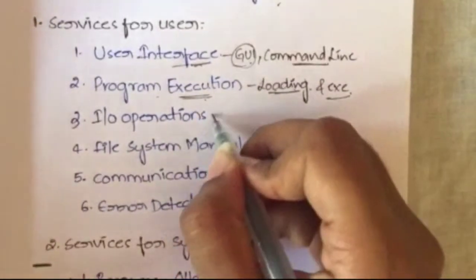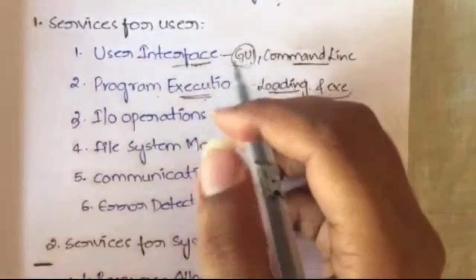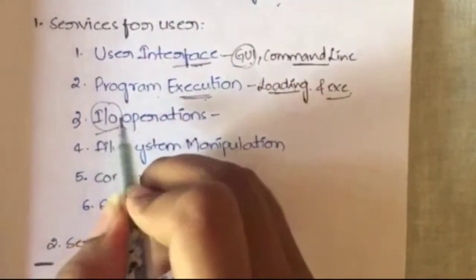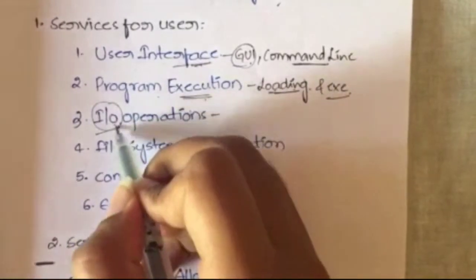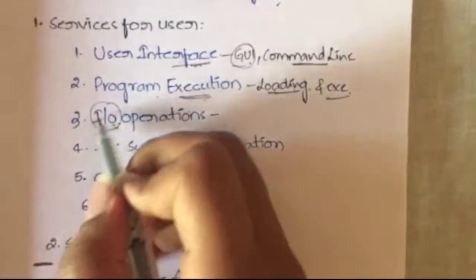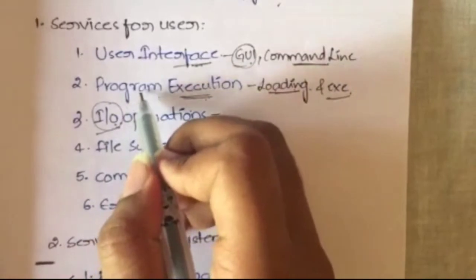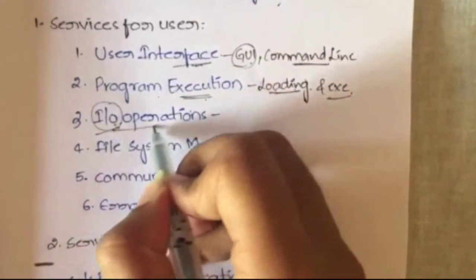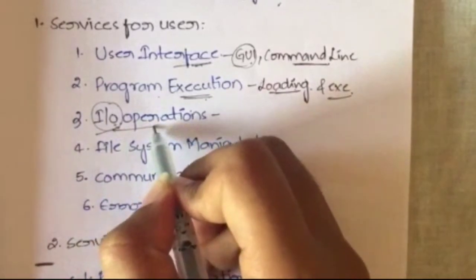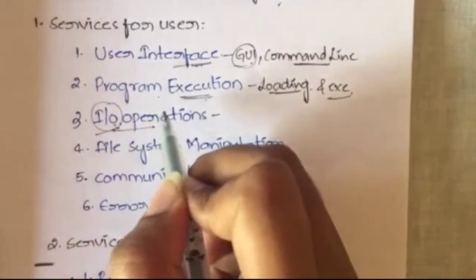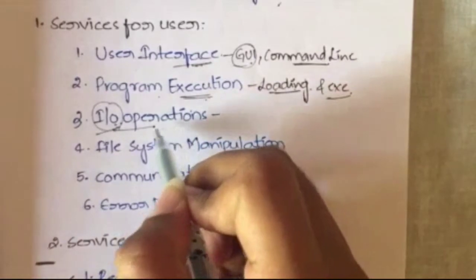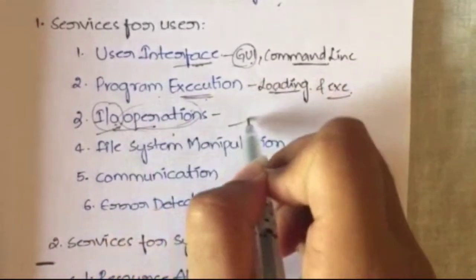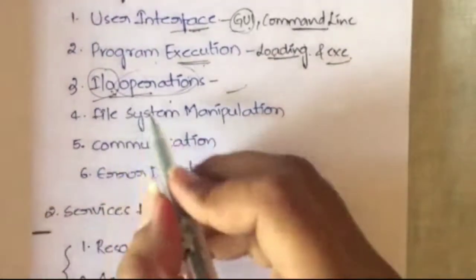The next service is IO operations. Your computer has many input and output devices connected to it. All those devices should be connected both physically and logically. The operating system provides the IO operations service to manage all those input and output devices and the operations they perform on your computer.